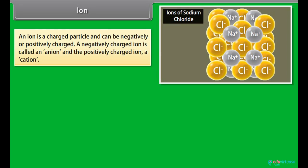An ion is a charged particle and can be negatively or positively charged. A negatively charged ion is called an anion and the positively charged ion is called a cation.